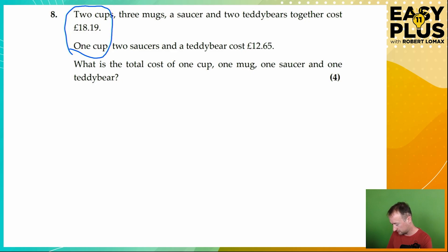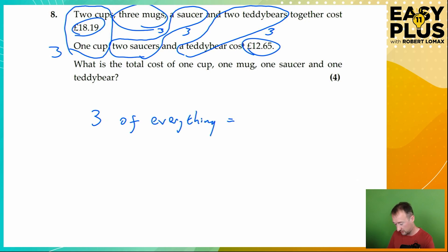We've got three cups. What do we have here? Three mugs. Here we have three saucers. And here we have three teddy bears. So in fact, three of everything costs £18.19 plus £12.65.